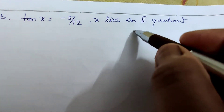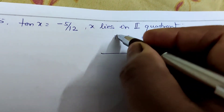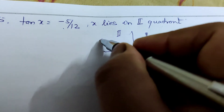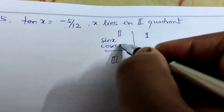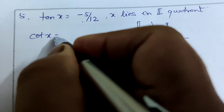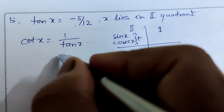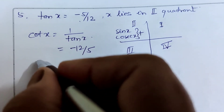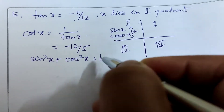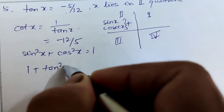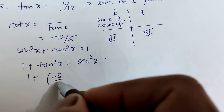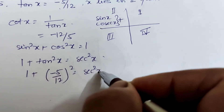Question 5: tan x = -5/12, x lies in the second quadrant. In the second quadrant, tan x is negative, and only sin x and cosec x are positive. So cot x = reciprocal of tan x = -12/5. Using 1 + tan²x = sec²x: 1 + (-5/12)² = sec²x.